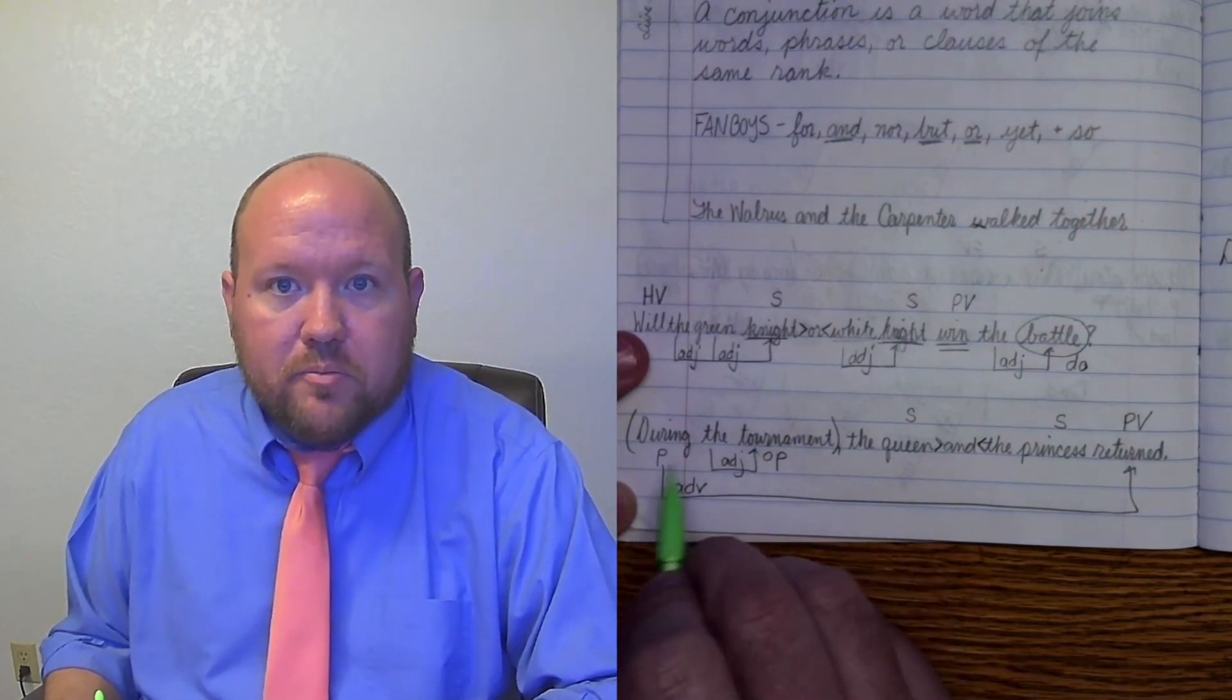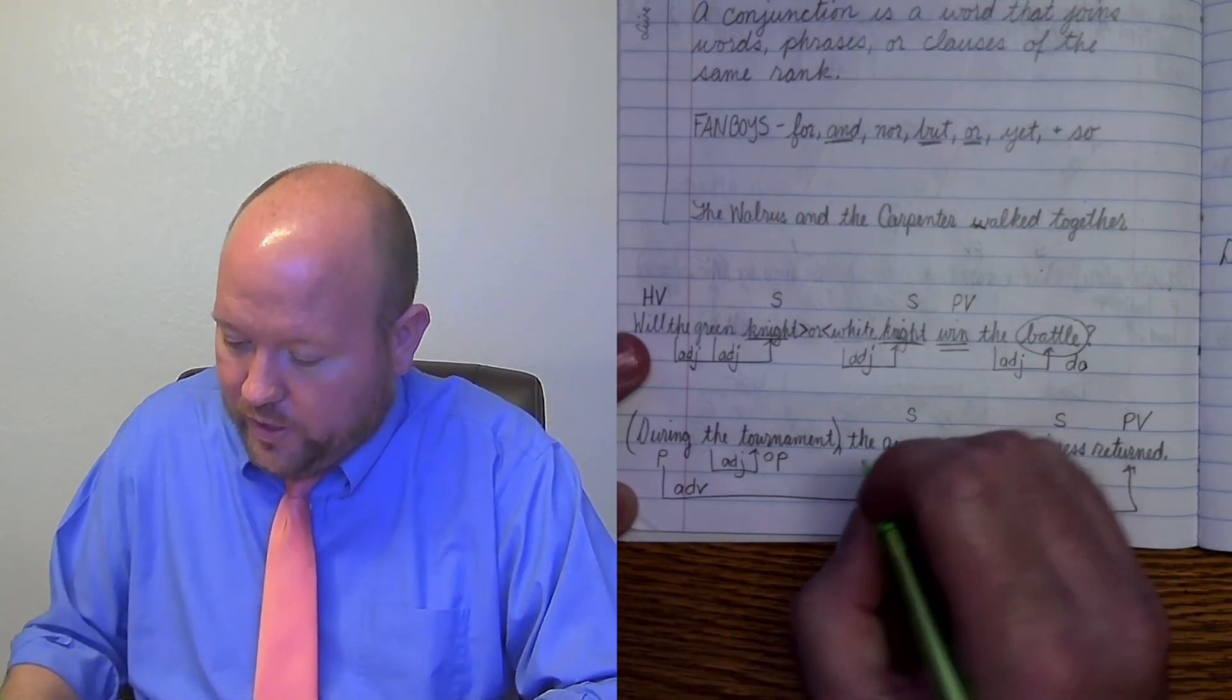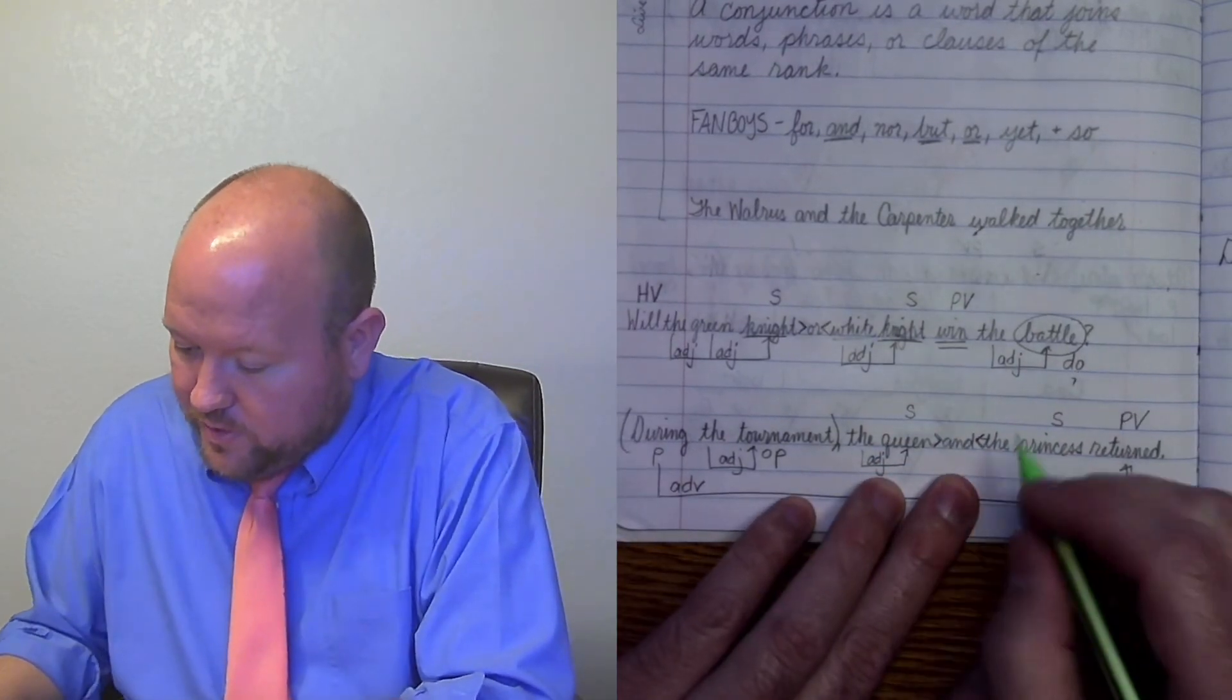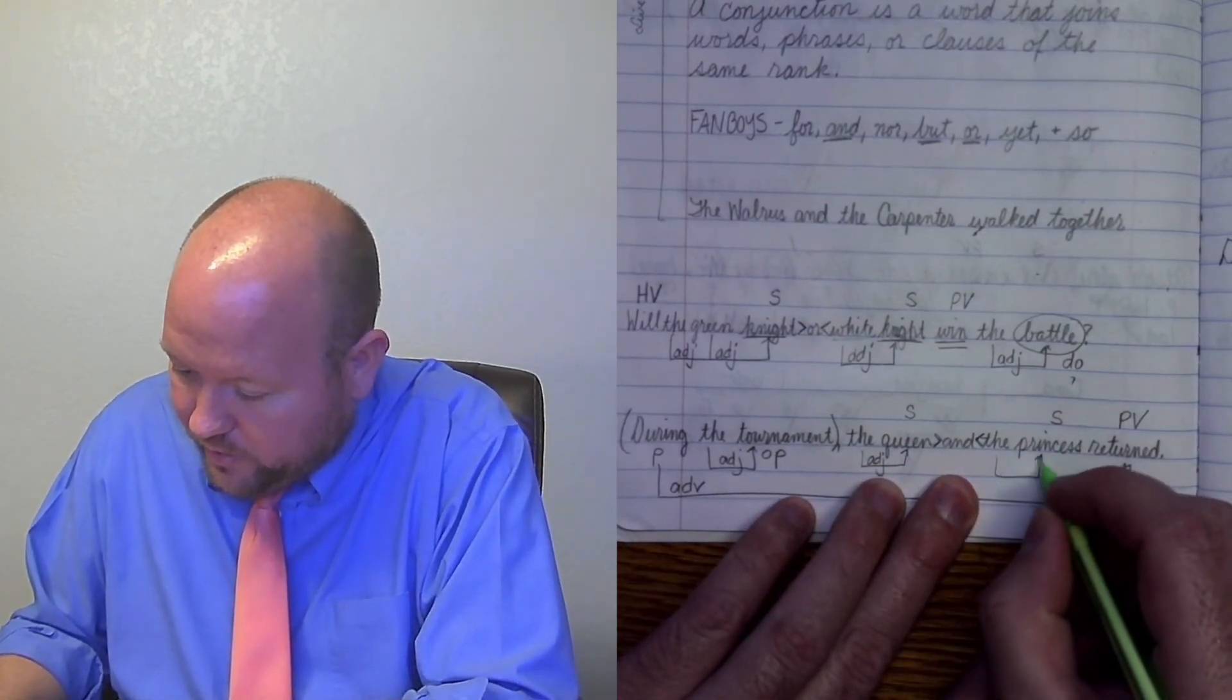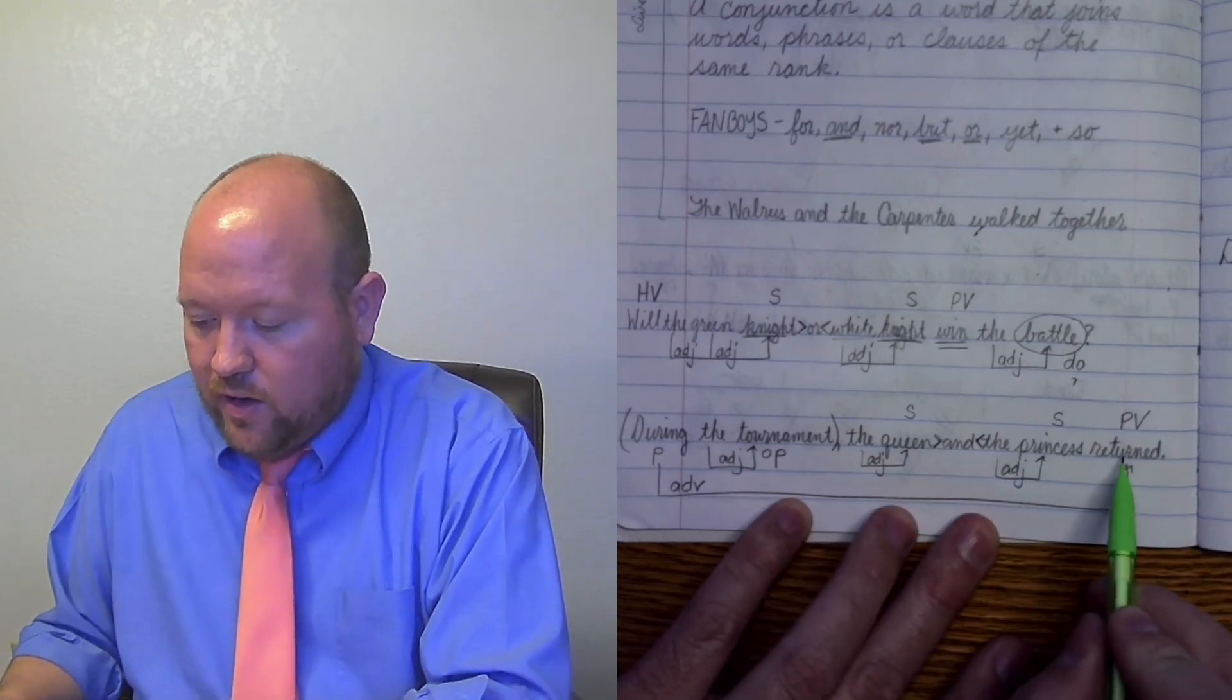So this is an introductory adverbial prepositional phrase. The queen, telling us which queen, so adjective. The princess, telling us which one, and then we get down to our verb.